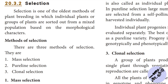The individual plants and groups of plants are sorted from the mixed population based on morphological characters. What are the methods of selection? Mass selection, pure line selection, and clonal selection.